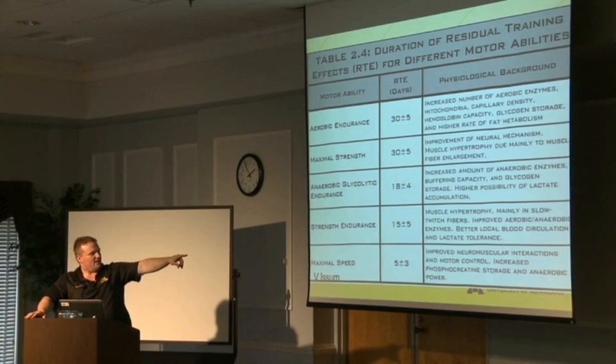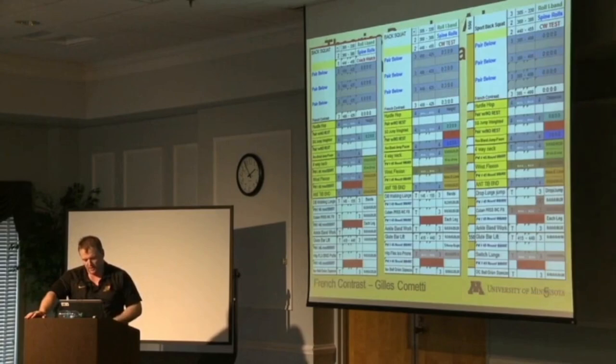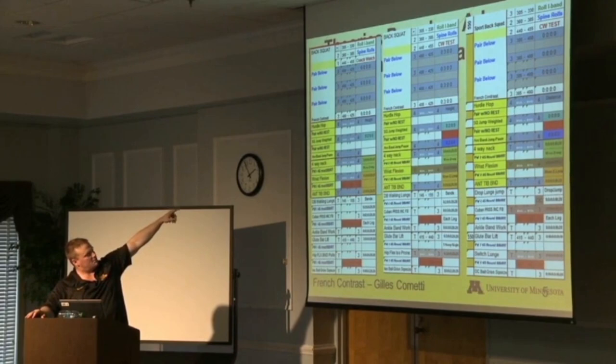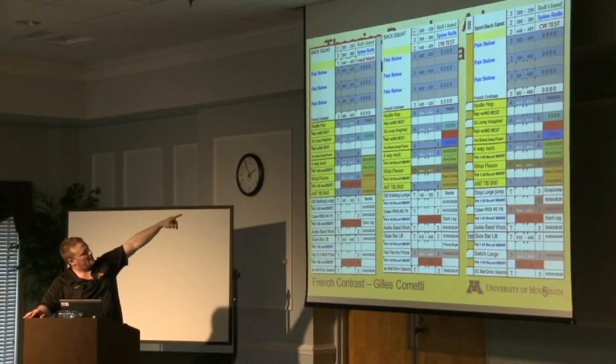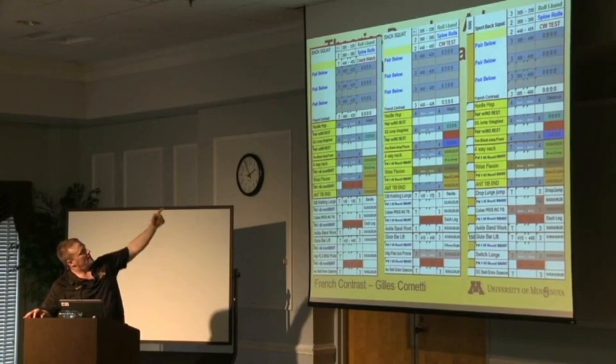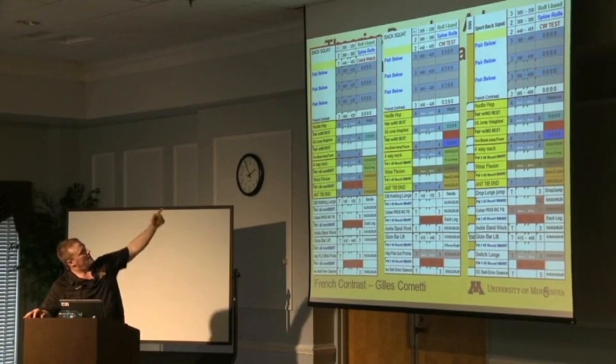Improve intermuscular actions and motor control — these are the residuals, one consideration you need to have in your training program. Here's an example: this is a Monday program for six weeks. The first slot is done week one, the next is weeks three and four, then five and six. You can keep the same exercises. I'll give a little credit to Giles Cometti, a French contrast researcher. This is one of the most effective methods I've ever encountered.